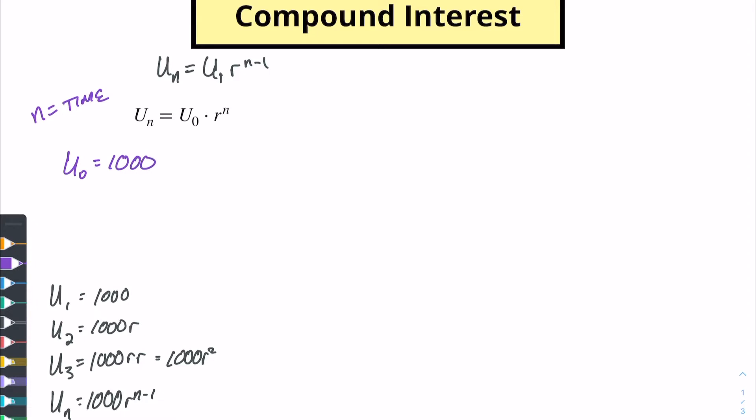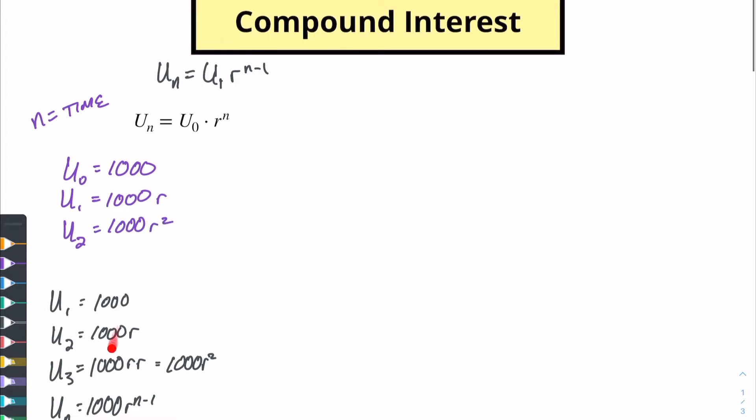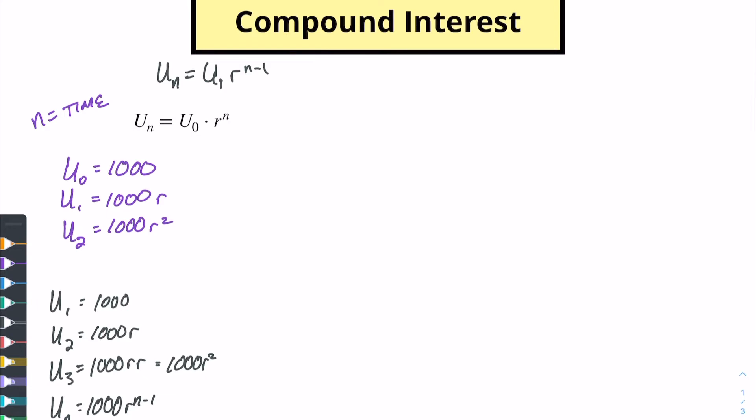So maybe that's our one thousand. And then after maybe one week one year one whatever we have some interest applied to this one thousand. So now we're going to have one thousand times r. And after two weeks two months two years whatever the case might be you're going to have r squared. So we're kind of following this idea. So all we're doing is really just shifting our terms. This is going to zero and this is losing that minus one because here we can see that the powers match our term numbers.